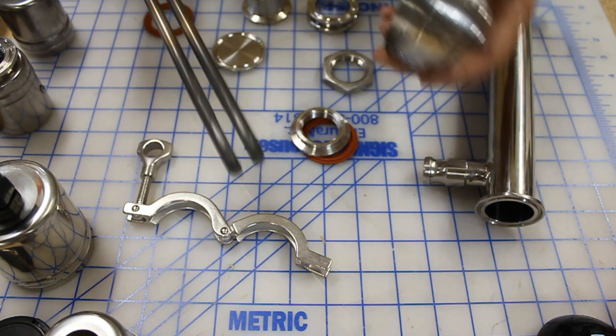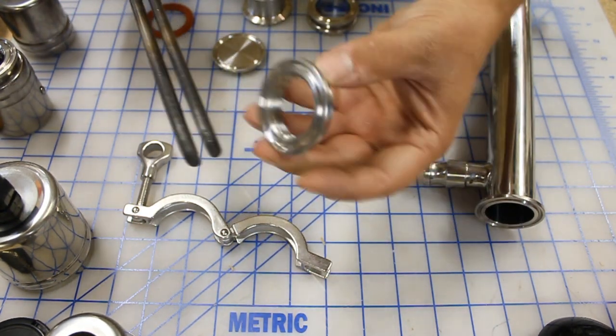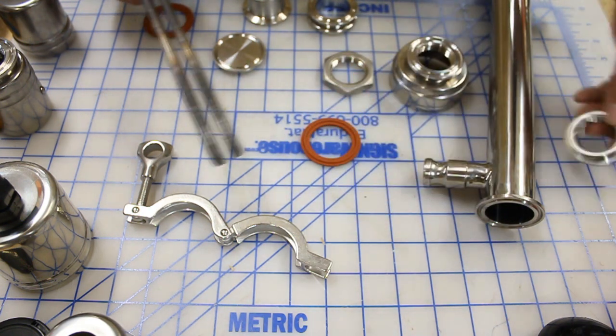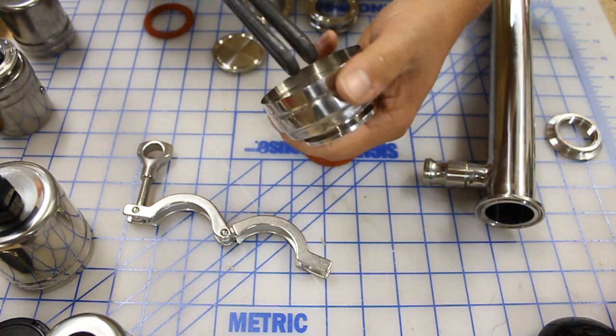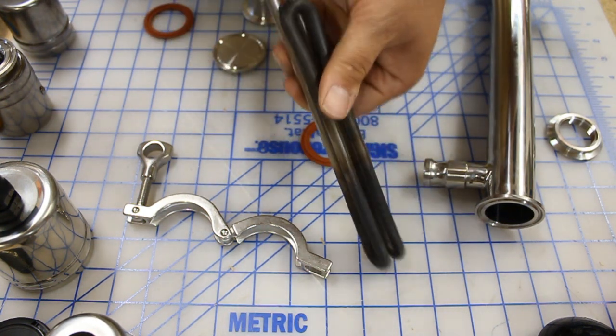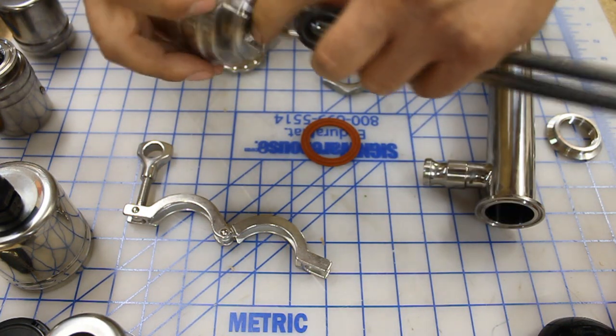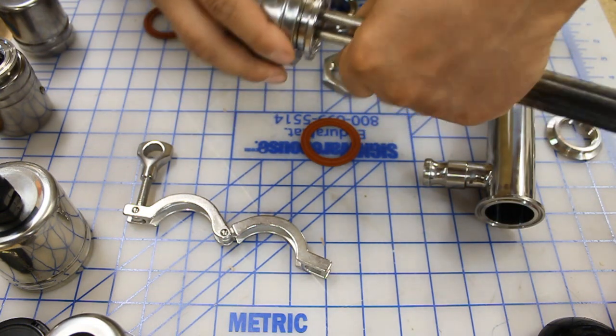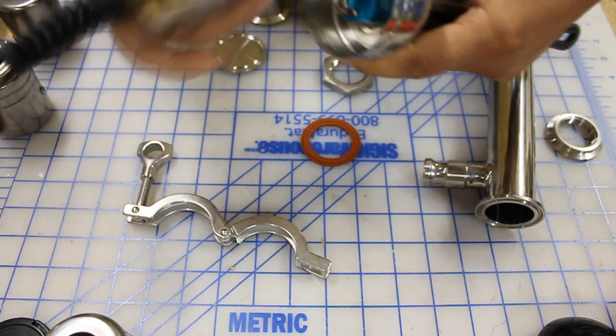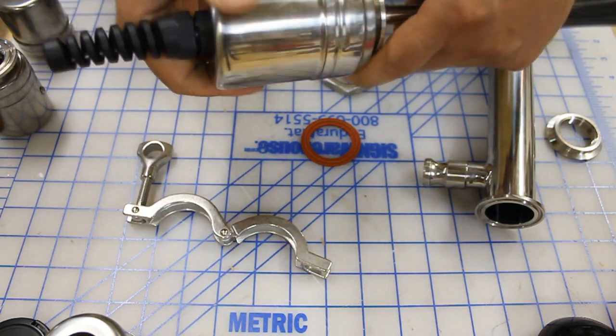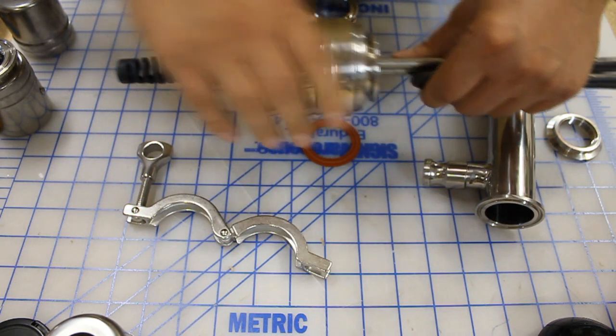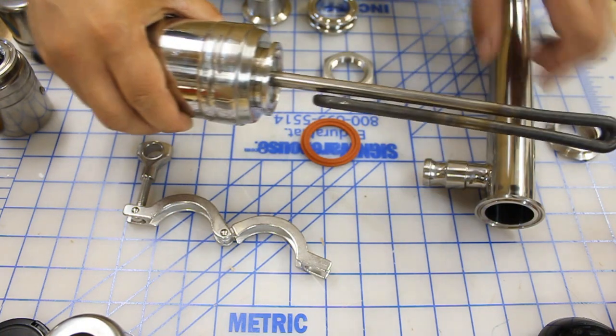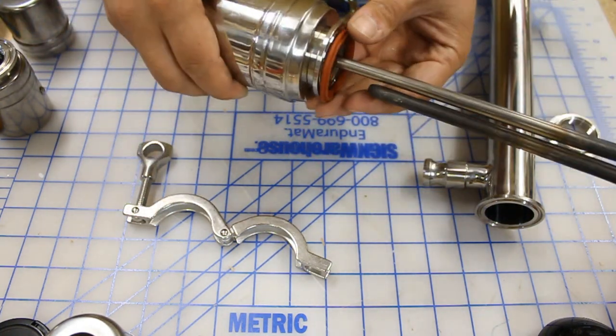We've gone a step further than just a simple inch and a half tri-clover to one inch MPTL adapter like this one. We've had it welded onto an electrical enclosure. So after you thread this adapter in, you make your electrical connections and thread this together, and now you have a protective enclosure and a grounding location.